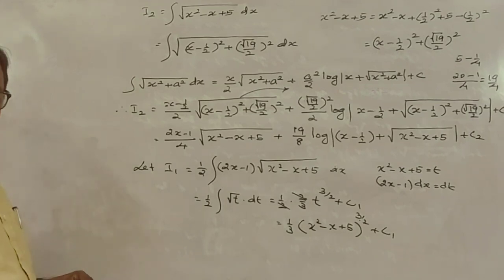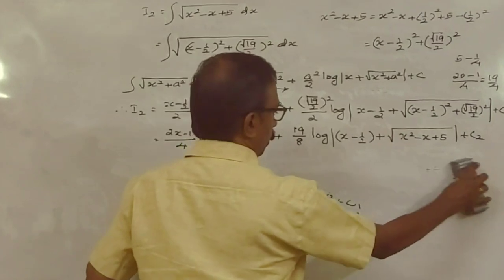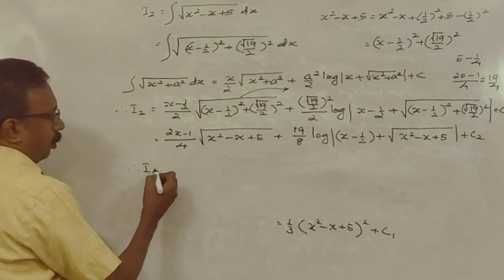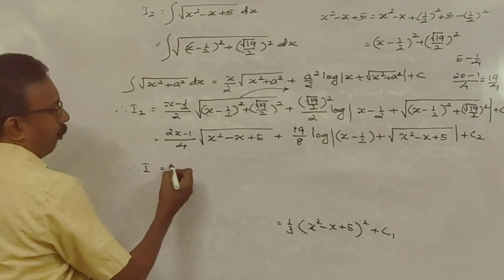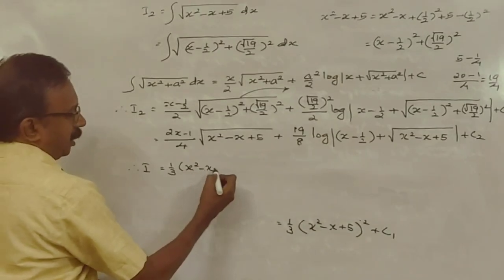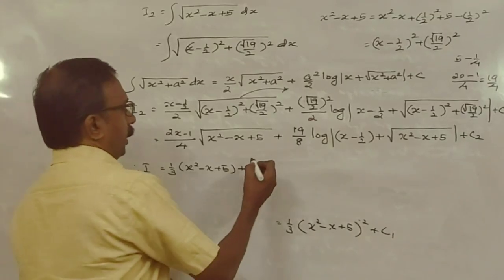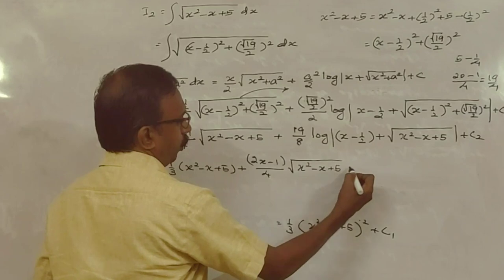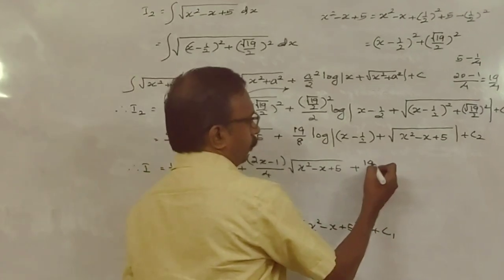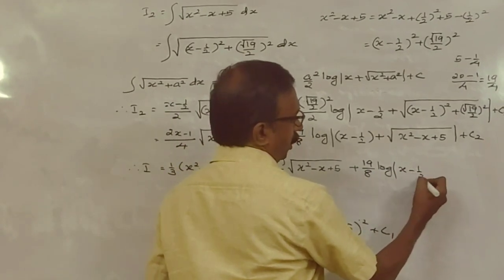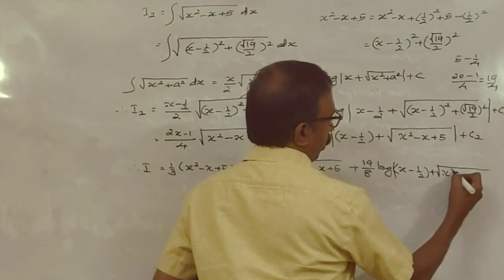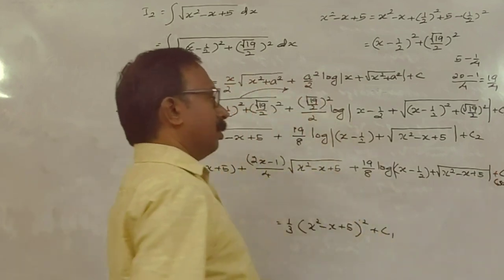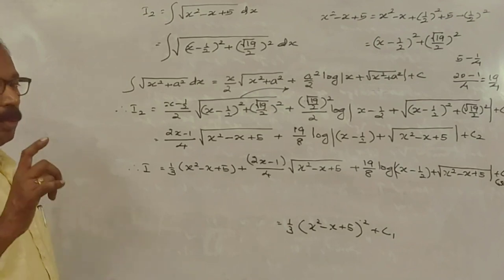Now substituting in I: I = I1 + I2 = (1/3)(x² - x + 5)^(3/2) + (2x - 1)/4 · root(x² - x + 5) + 19/8 · log|x - 1/2 + root(x² - x + 5)| + C, where C1 and C2 combine into the arbitrary constant C.